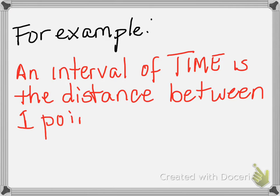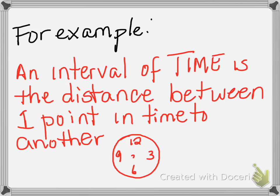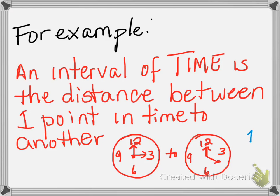So if you were to think of a clock, an interval of time could be an hour, five minutes, 30 seconds, or 45 minutes. Those are intervals of time — the distance from one point in time to another.